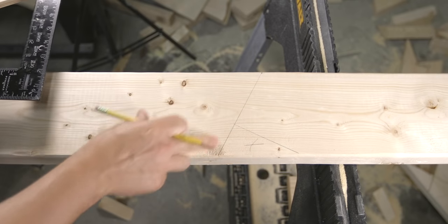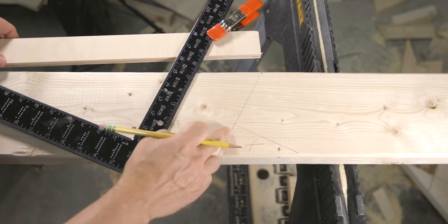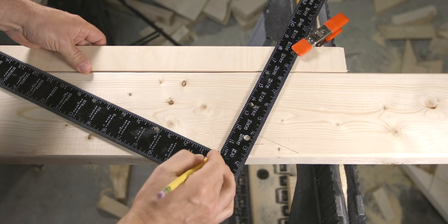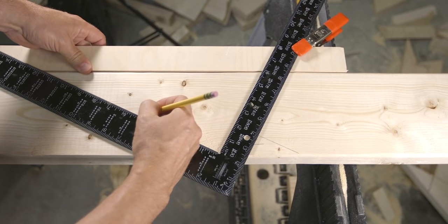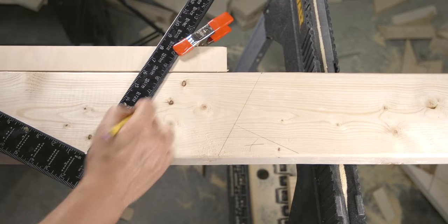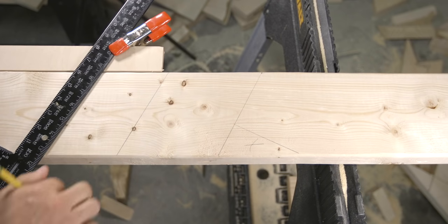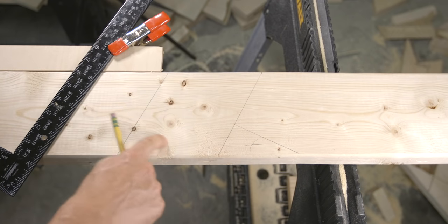Next is the overhang which is five inches from this line. So line the tongue back up, measure over five, make a mark and draw another line.